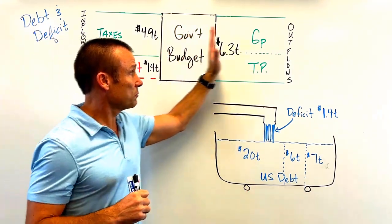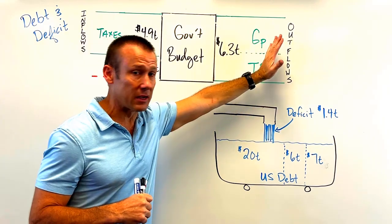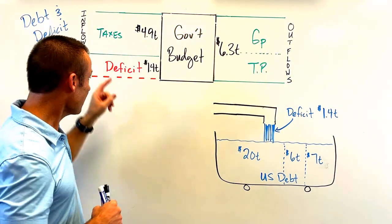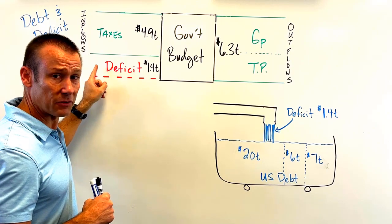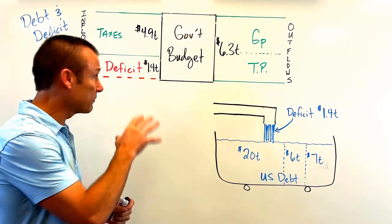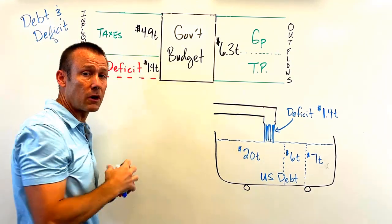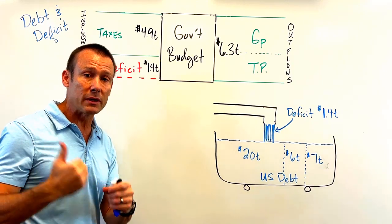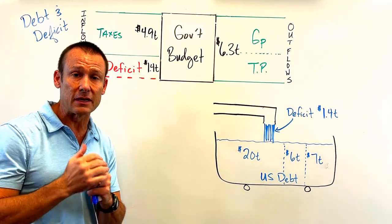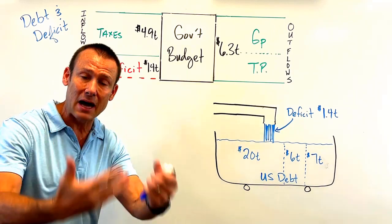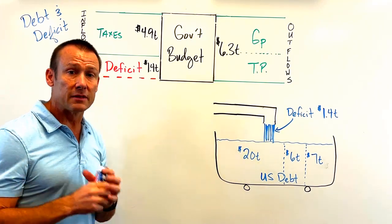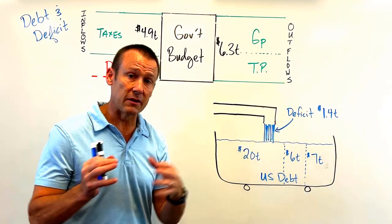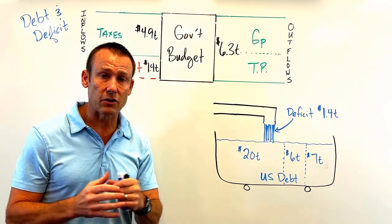So again, the deficit is a shortfall in the budget — when you have more spending obligations, more outlays legislated, than you have tax revenues coming in. We have to finance it, we head to the financial markets, and we borrow. We issue things like Treasury bonds in those financial markets, which are basically IOUs.